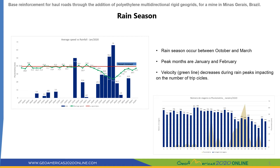For haul roads, major problems occur especially during the rain season. In Brazil, the rain season occurs between October and March, and the peak months are basically January and February. This first graph illustrates January rainfall, and the green line illustrates the velocity of the trucks during January. We can see the decrease in truck velocity happening during rain peaks.